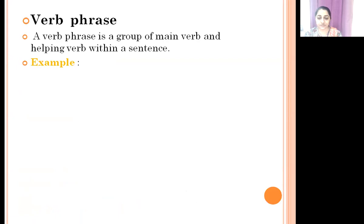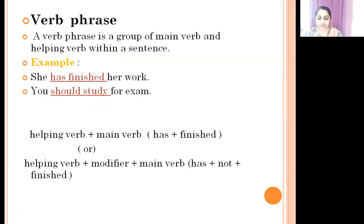Next is Verb phrase. A verb phrase is a group of a main verb and a helping verb within a sentence. For example: 'She has finished her work.' Here 'has' is the helping verb and 'finished' is the main verb, so 'has finished' is the verb phrase. Another example: 'You should study.' Here 'should' is the helping verb and 'study' is the main verb, so 'should study' is the verb phrase. The verb phrase follows the pattern: helping verb plus main verb, or helping verb plus modifier plus main verb.